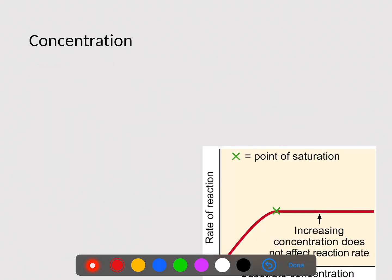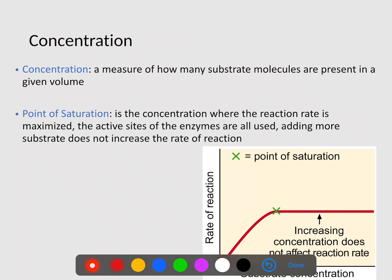Now, concentration is another thing that's going to affect an enzyme. Concentration is just simply a measure of how many substrate molecules are present in a given volume. So we eventually will reach a point called the point of saturation. The point of saturation is the concentration where the reaction rate is maximized. So in other words, if I have, let's just say, three enzymes here, and these three enzymes are working as hard as they can to break down the substrate that's present.